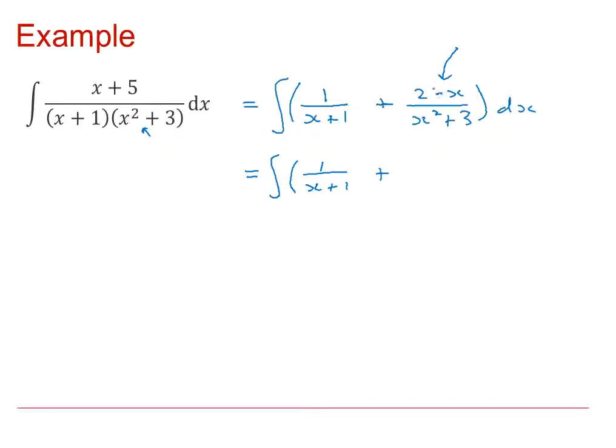But we can separate this second fraction into two separate fractions. Make sure you split it at the numerator, not the denominator. So splitting it at the numerator, we can have 2 over x squared plus 3 and minus x over x squared plus 3. So we end up with three integrals.